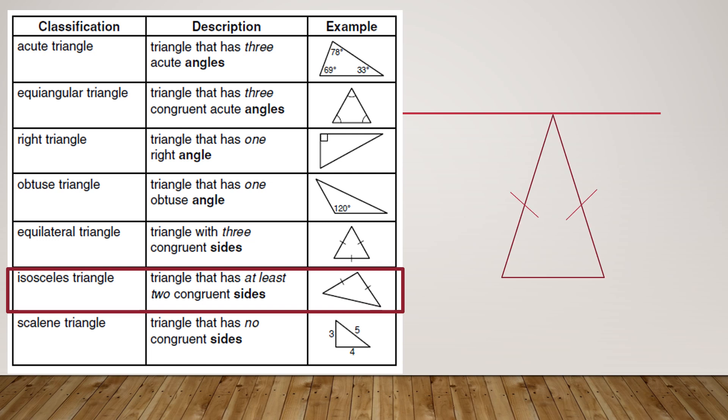An isosceles triangle has two equal sides. Scalene triangle has no equal sides. In an isosceles triangle, those sides are called the legs, whereas the other side is called the base.